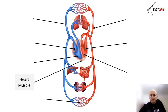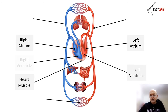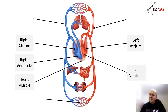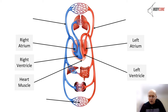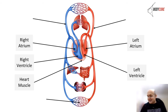The heart has four chambers. The top chambers are called atriums and the bottom two chambers are called ventricles. The atriums are the collecting chambers — that's where blood comes into the heart. The ventricles are responsible for pumping blood; they contract and pump blood out of the heart. The left side of the heart deals with oxygenated blood and the right side with deoxygenated blood.